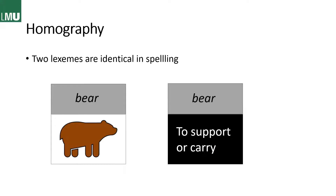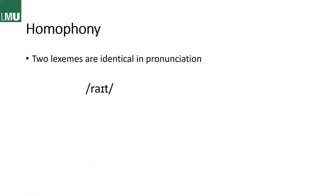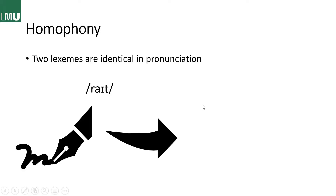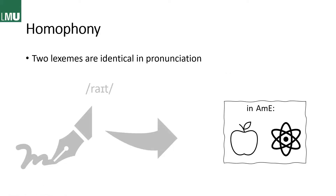Another type is homography, where two lexemes are identical in spelling — for example 'bear' the animal and 'bear' the verb meaning to support or carry. That's just about spelling. We can also have identical pronunciation, which is called homophony — for example 'write' when you write with a pen and 'right' as the direction. And as a little easter egg: in American English, due to the flapped T, 'atom' and 'Adam' become homophones.